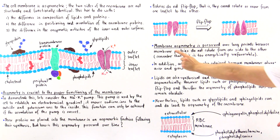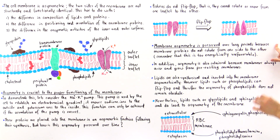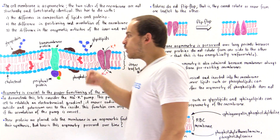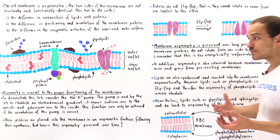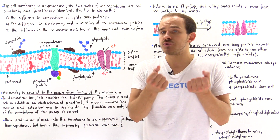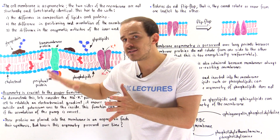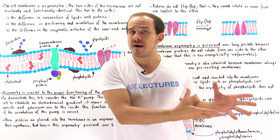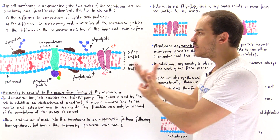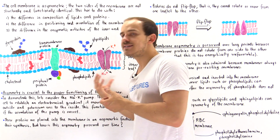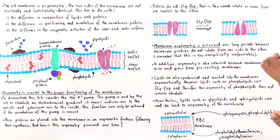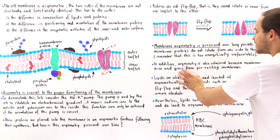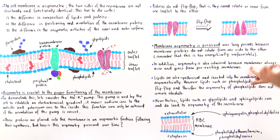Membrane asymmetry is preserved over long periods of time because membrane proteins do not rotate from one side of the membrane to the other — this is too energetically unfavorable. In addition, what also preserves the asymmetry of the membrane is the fact that membranes are always constructed from pre-existing membranes, and those pre-existing membranes are always asymmetric. When we build our cell membrane, we do so by expanding a pre-existing membrane that was asymmetric to begin with. So asymmetry is also preserved because membranes always arise and grow from pre-existing asymmetric membranes.